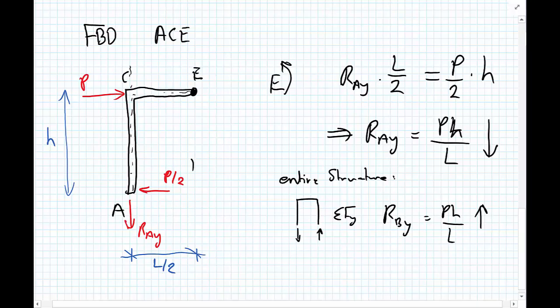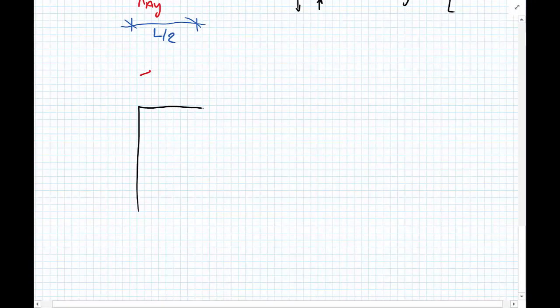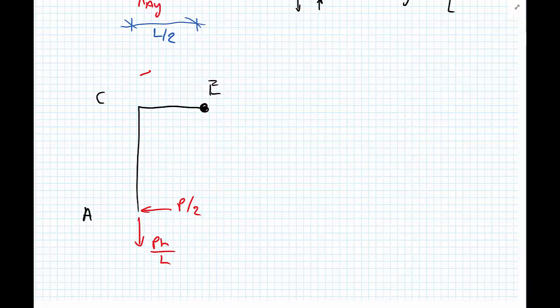So we can continue. Now that we know the reactions P upon 2, P H upon L, let's redraw our little section that we're looking at, which is A, C, and E. And I'll draw the hinge there just to remind us. So we have the horizontal reaction P upon 2 and vertical reaction of P H upon L.